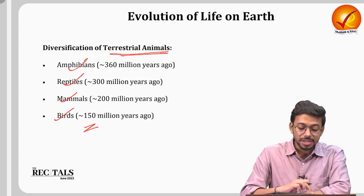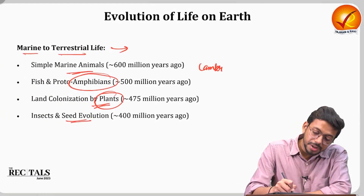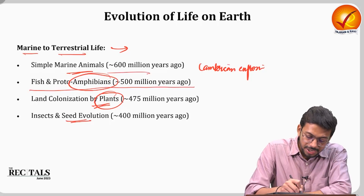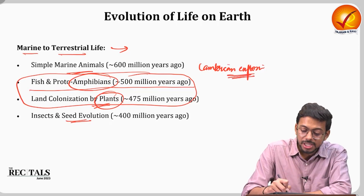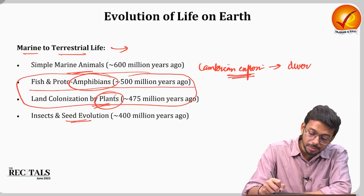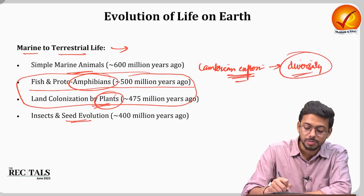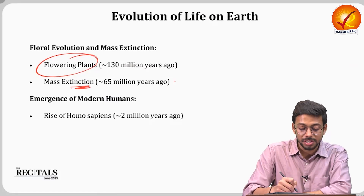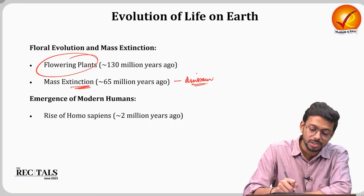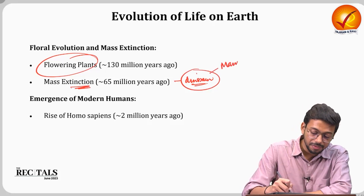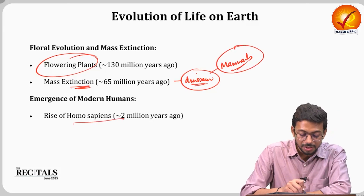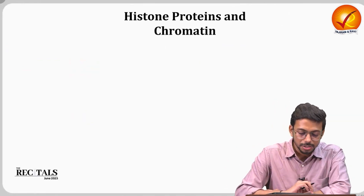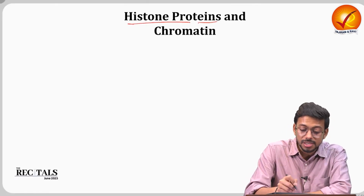Terrestrial animals followed — amphibians, reptiles, mammals, and birds. In this period there was the Cambrian explosion, which was responsible for a huge diversity of life forms. Then birds developed, flowering plants appeared, and a mass extinction event caused the dinosaurs to go extinct. Mammals then took over, leading to the predominance of mammals on Earth, and eventually homo sapiens appeared around 2 million years ago.